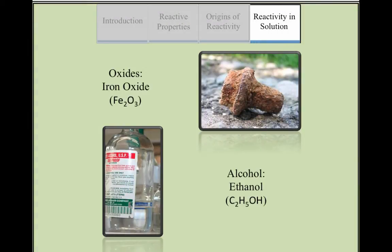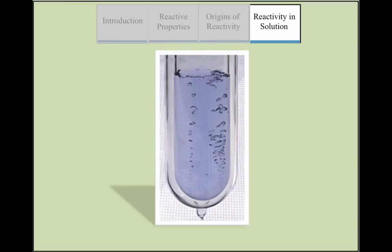Oxygen can be combined with many different elements to form inorganic compounds such as iron oxide, commonly known as rust, and organic compounds such as alcohol, for example ethanol. Oxygen is found as O2, a colorless gas, at standard temperature and pressure.